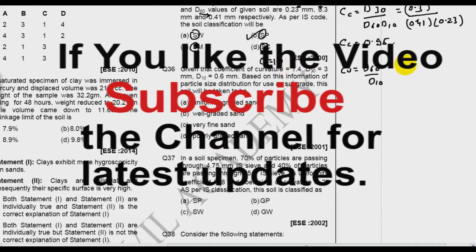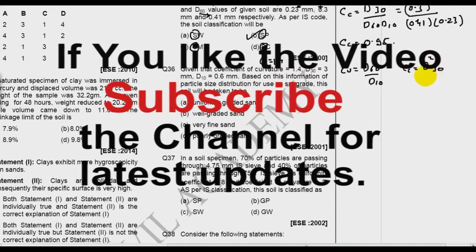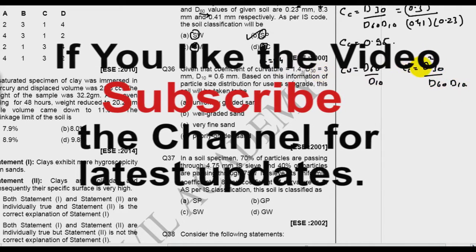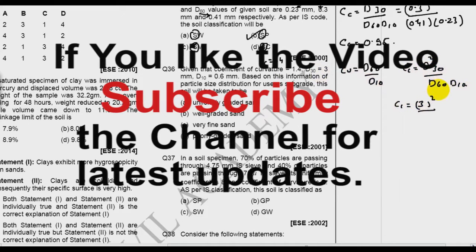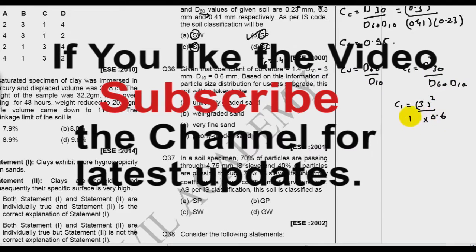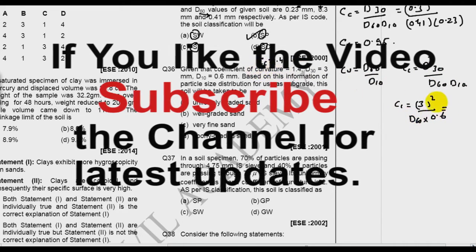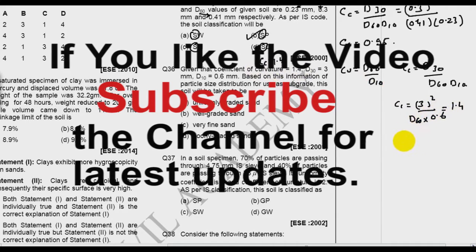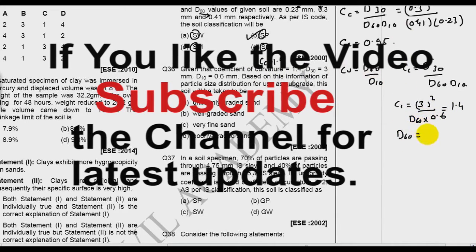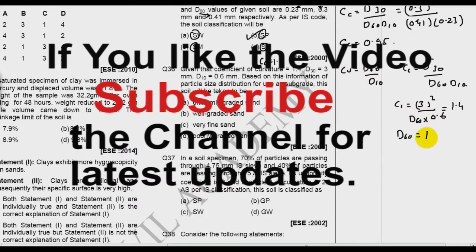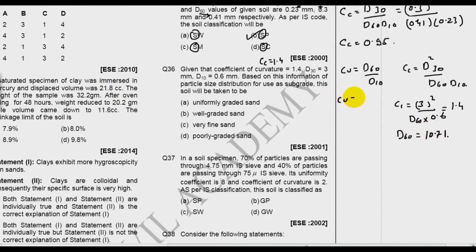Now there is a little bit lengthy calculation. I start from here that Cc is d30 squared over d60 d10. Now d30 is given as 3, so 3 squared. d10 is given as 0.6 and d60 I don't know but Cc is given as 1.4. So you can find that d60. If you solve, you get d60 equal to 10.71, very high value. So what is your Cu now? 10.71 divided by 0.6. So it is 17.85. So Cu is 17.85.